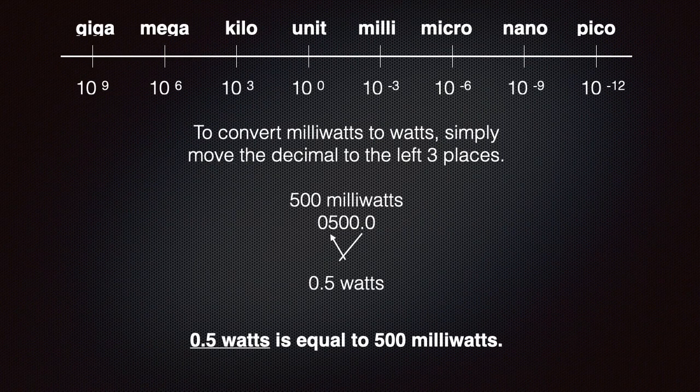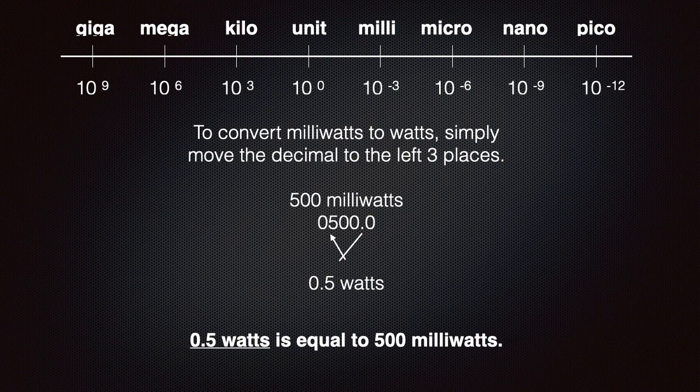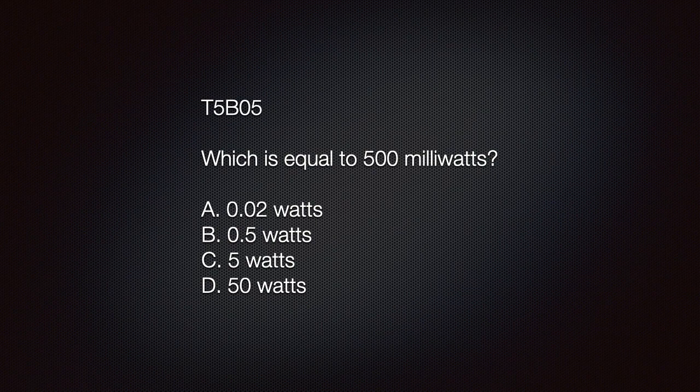Understand that 0.5 watts is equal to 500 milliwatts. To convert milliwatts to watts, simply move the decimal to the left three places. Starting with 500 milliwatts and moving the decimal gives us 0.5 watts. The question might be: which is equal to 500 milliwatts? A) 0.02 watts, B) 0.5 watts, C) 5 watts, or D) 50 watts.